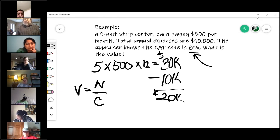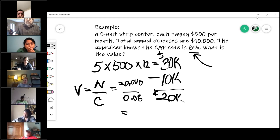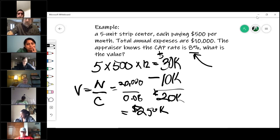Now, value is net divided by cap. So you take $20,000, divide that by 8%, which is 0.08. And that gives you, I guess I need to do the math, $250,000. Is that right? That's what I got. I love algebra. So the value is equal to $250,000.